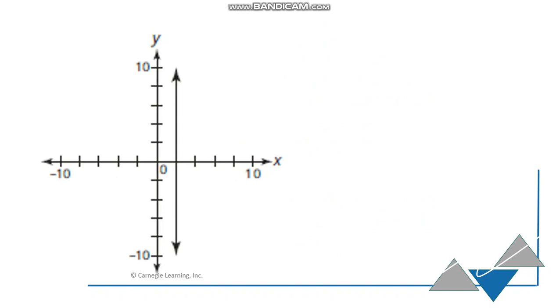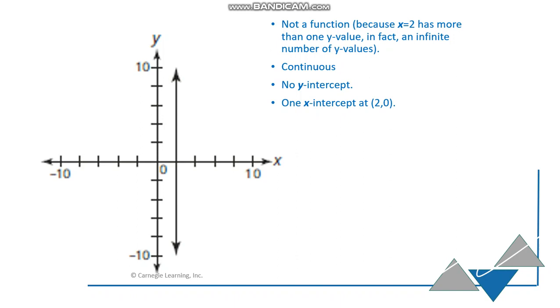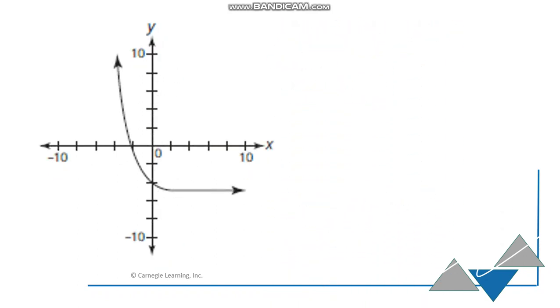Alright, what about this one? This is a line, but it's the only line that is not a function. Because at x equal to 2, there's more than one y-value. In fact, an infinite number of y-values. So it completely fails the vertical line test. It is continuous. There's no y-intercept. One x-intercept at 2, 0. It's neither decreasing or increasing. The domain, if I squish that all down to the x-axis, all I have is x equal to 2. But the range is the entire number line on the y-axis. All y-values. Alright.